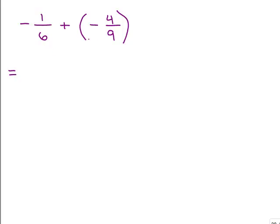What's the common denominator for 6 and 9? I can show you one way: find what number goes into both 6 and 9 — that's 3. 3 goes into 6 twice and 3 goes into 9 three times. This method works when you only have 2 denominators. So I get 6 times 3 or 9 times 2, which is 18.